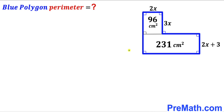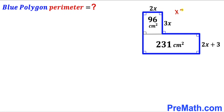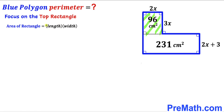To calculate the perimeter of this blue polygon, we need the sum of all side lengths, so we are going to find the value of x first. Let's focus on this top rectangle and recall the area of a rectangle formula: area equals length times width. The dimensions of this top rectangle are 2x and 3x, and the area has been given as 96.